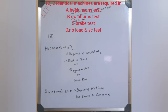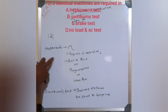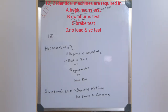The next question asks which test requires two identical machines. The options are: Swinburne's test, brake test, no-load and short circuit test. The test that uses two identical machines — one as a generator and one as a motor — is the back-to-back test, also called the regenerative test or heat run test. This is the Hopkinson's test.